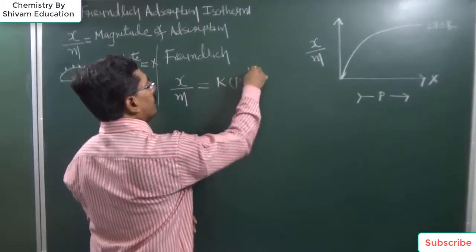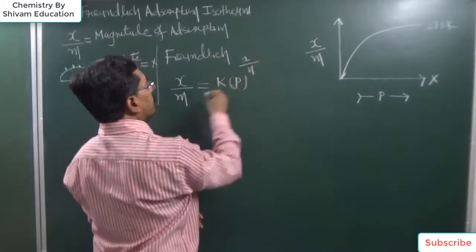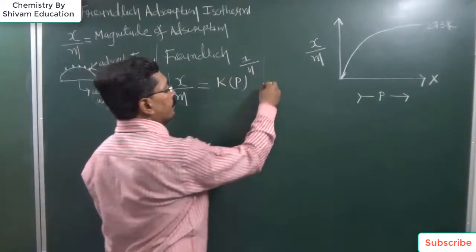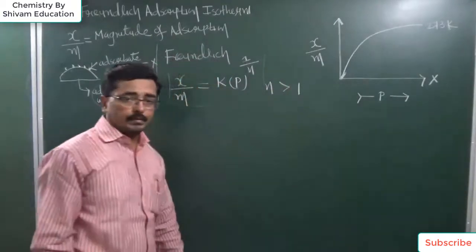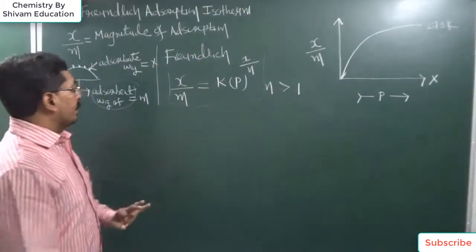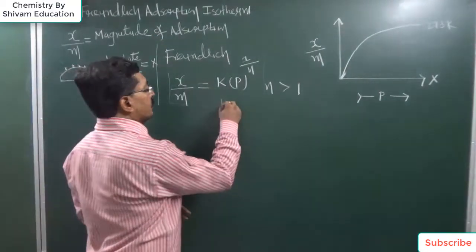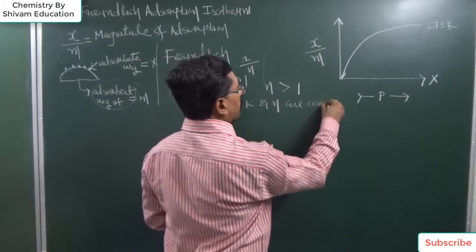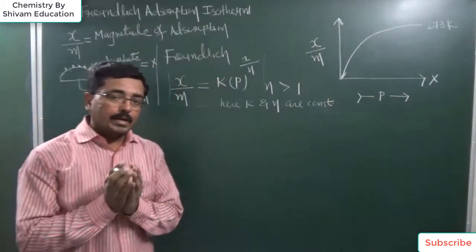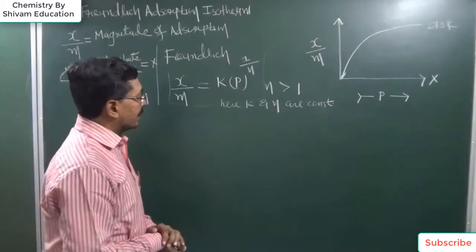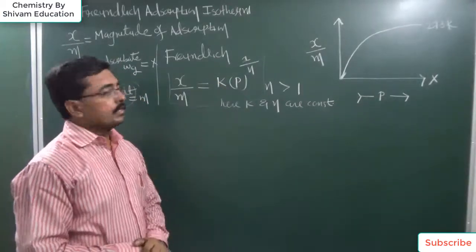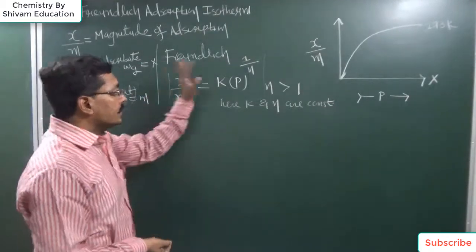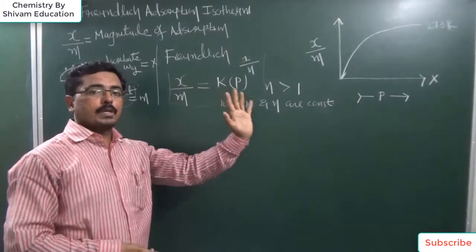This relation or equation is known as the Freundlich adsorption isotherm. The equation is: x by m equal to k into p raised to 1 upon n. In this equation, the value of n is always greater than 1. Here k and n are constants, and the value of these constants depends upon the nature of the adsorbate. p is the pressure, x by m is the magnitude of adsorption, and this relation is known as the Freundlich adsorption isotherm.